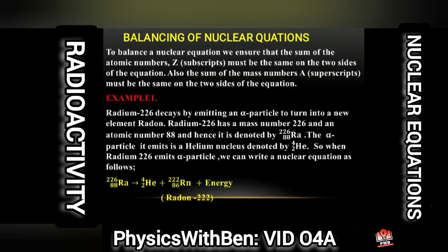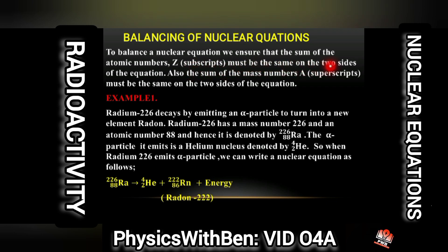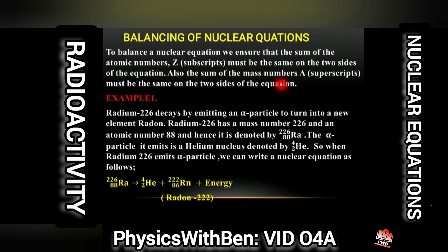Next up we want to look at balancing of nuclear equations. To balance a nuclear equation, we ensure that the sum of the atomic numbers Z (subscript) must be the same on the two sides of the equation. Also, the sum of the mass numbers A (superscript) must be the same on the two sides of the equation.